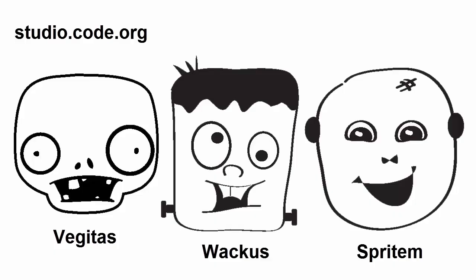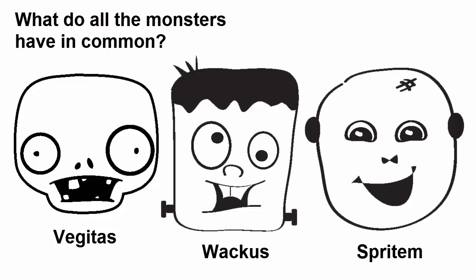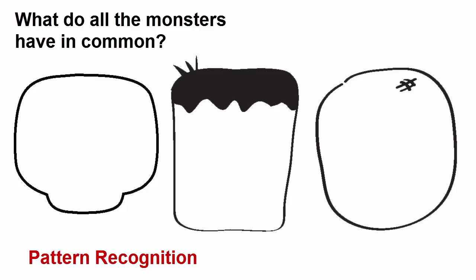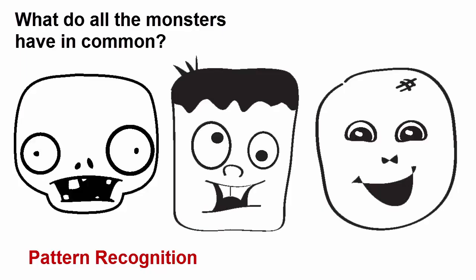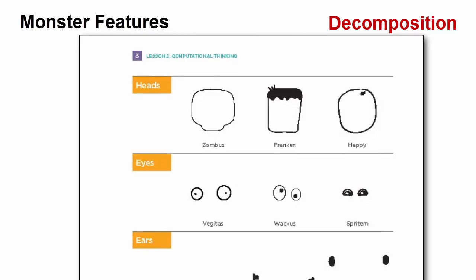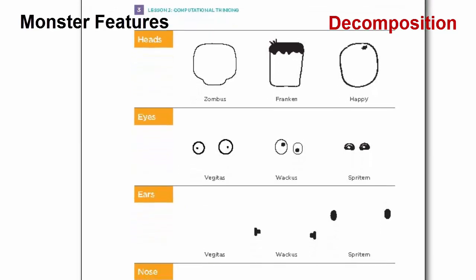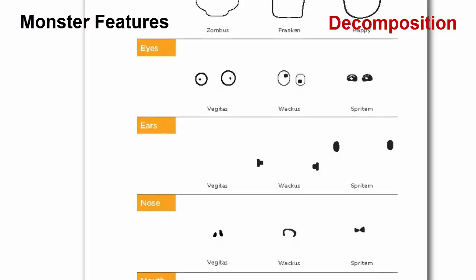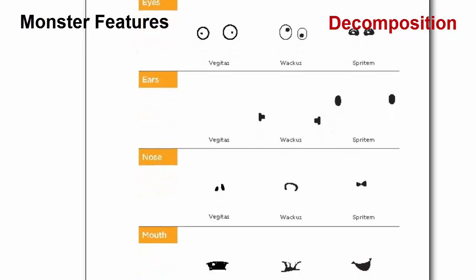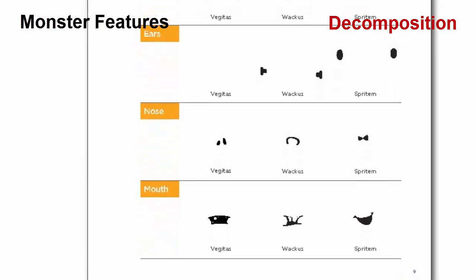The first step is decomposition and pattern finding. What features do these monsters have in common? How can we group features? They all have a head. They all have eyes. They all have a nose. They all have a mouth. And two have ears and one does not. Next, have students use tracing paper to physically group features. They can name these features based on the monster's name. We will continue with this activity in the next video.